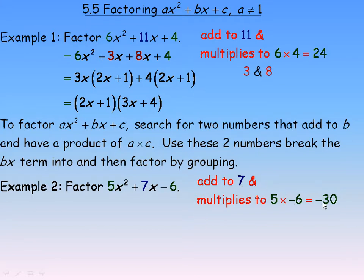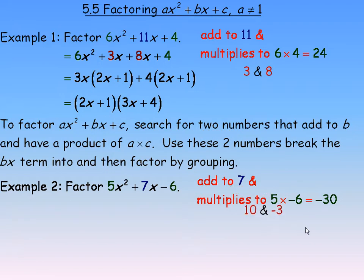We could search through lots of factor pairs. For example, 5 and negative 6 do multiply to negative 30, but they don't add to 7. The numbers that you need are actually 10 and negative 3. 10 and negative 3 multiply to negative 30 and add to positive 7.